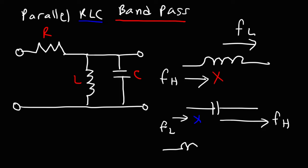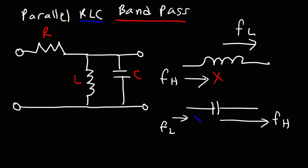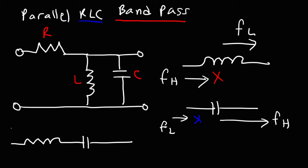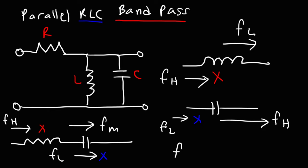Sometimes you may have an inductor in series with a capacitor. The high-level frequencies are blocked by the inductor. The low-level frequencies are blocked by the capacitor. So the frequencies that make it through are the mid-level frequencies, particularly those that are in resonance with the inductor and the capacitor. The resonant frequency for an LC circuit is 1 over 2π times the square root of L times C.